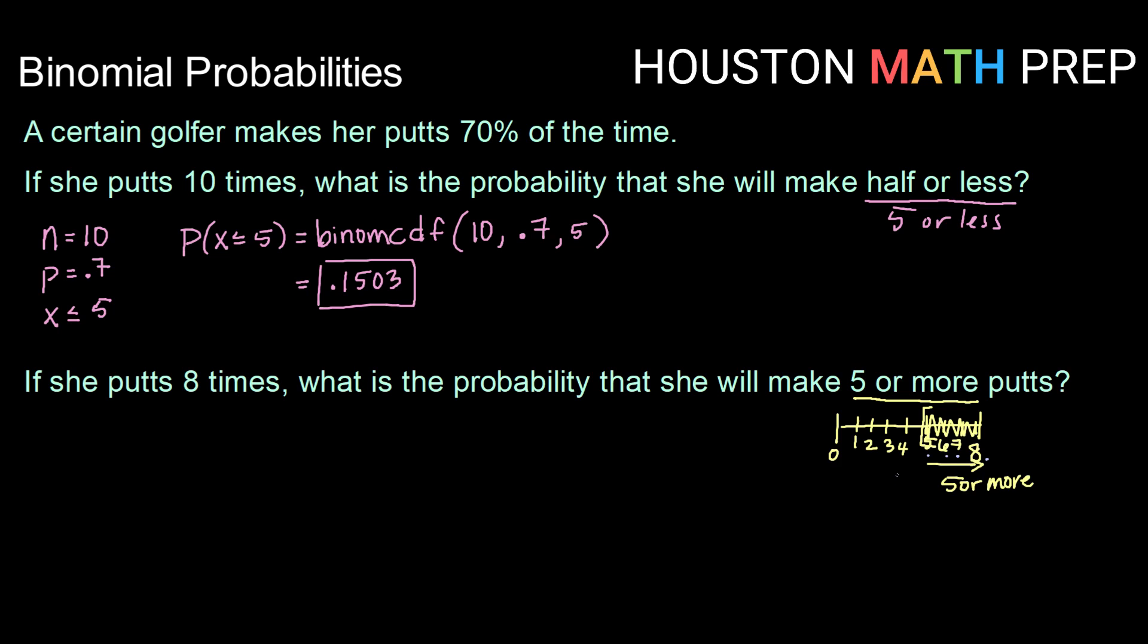Well, our cumulative distribution function only tells us how to find a value or below. So what we could do is we could use the cumulative distribution function to find 4 or less. And since those two are complements of each other, 0 to 4 and 5 to 8 make up all the possible outcomes, then 1 minus the probability of being less than or equal to 4 should be equal to the probability of being greater than or equal to 5.